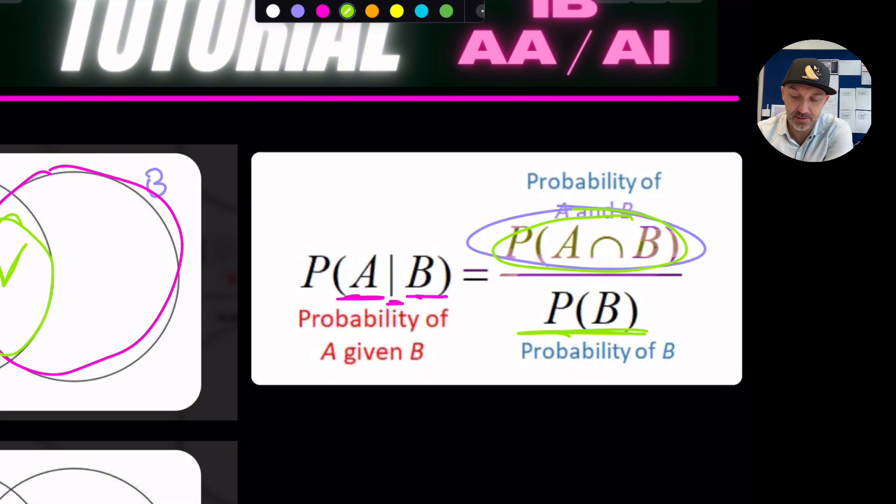So the thing the denominator on this conditional probability will always be the thing that is given. So when it says given that will always be part of the denominator and the numerator will always be the combination of the two. So it's A out of B. So we take that section.